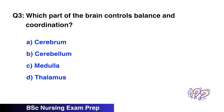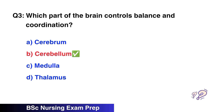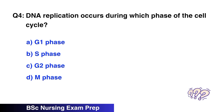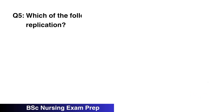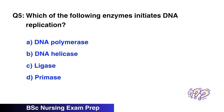Question number 3: Which part of the brain controls balance and coordination? The right option is B, cerebrum. Question number 4: DNA replication occurs during which phase of the cell cycle? The right option is B, S phase.